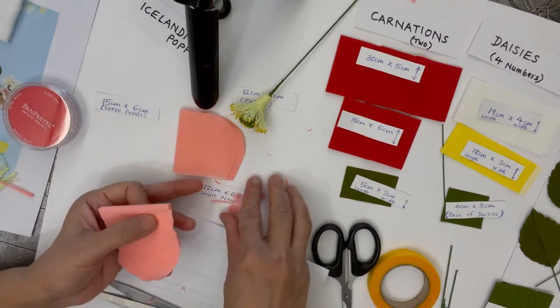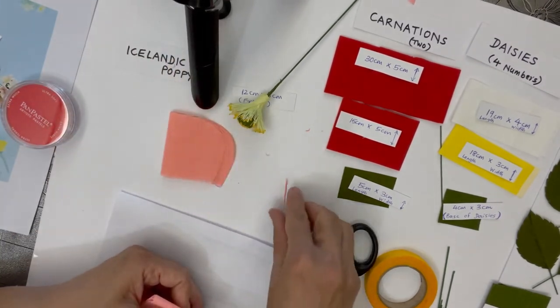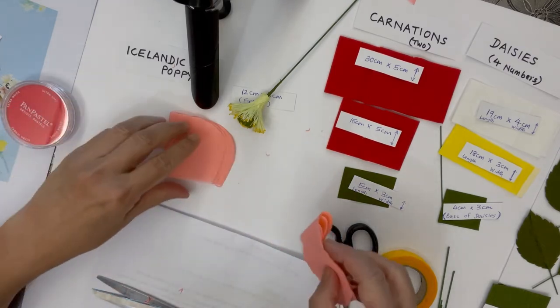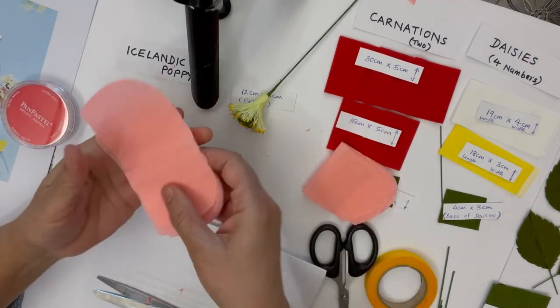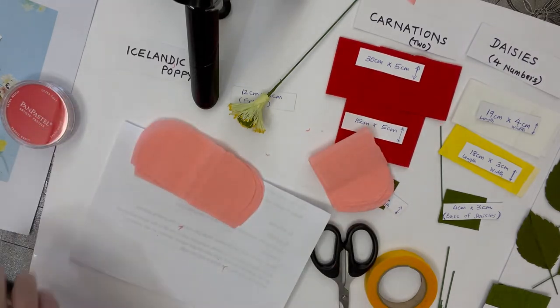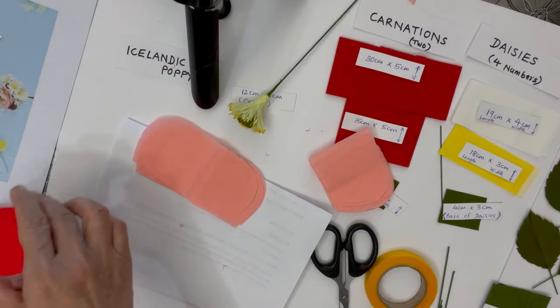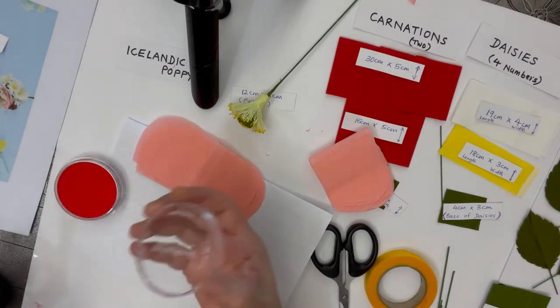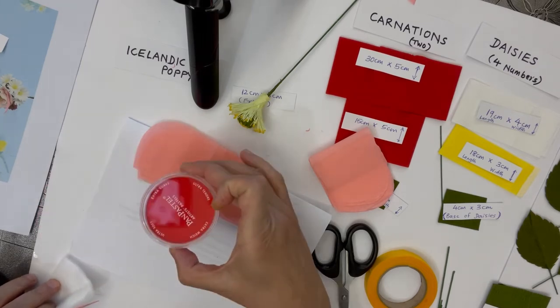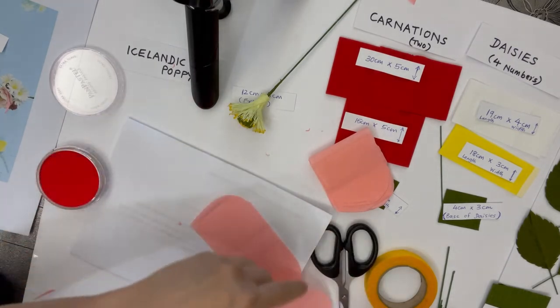Once you're done with the small and big petals of the Icelandic poppy, I'll show you how to actually crease the petals. You can use pan pastels.